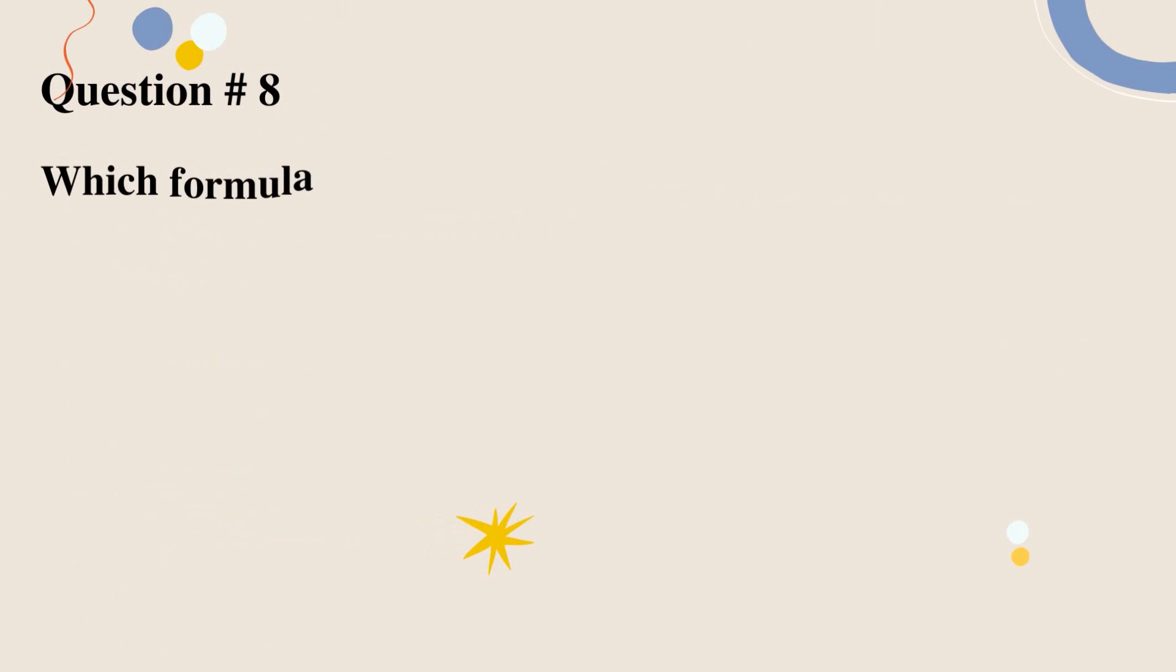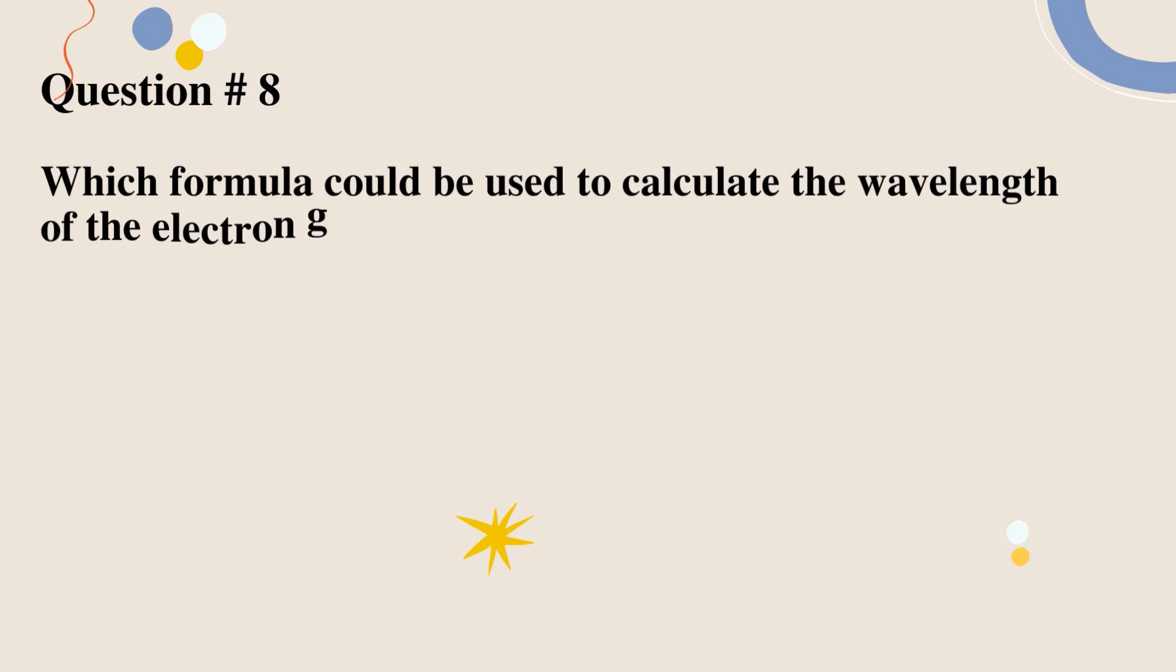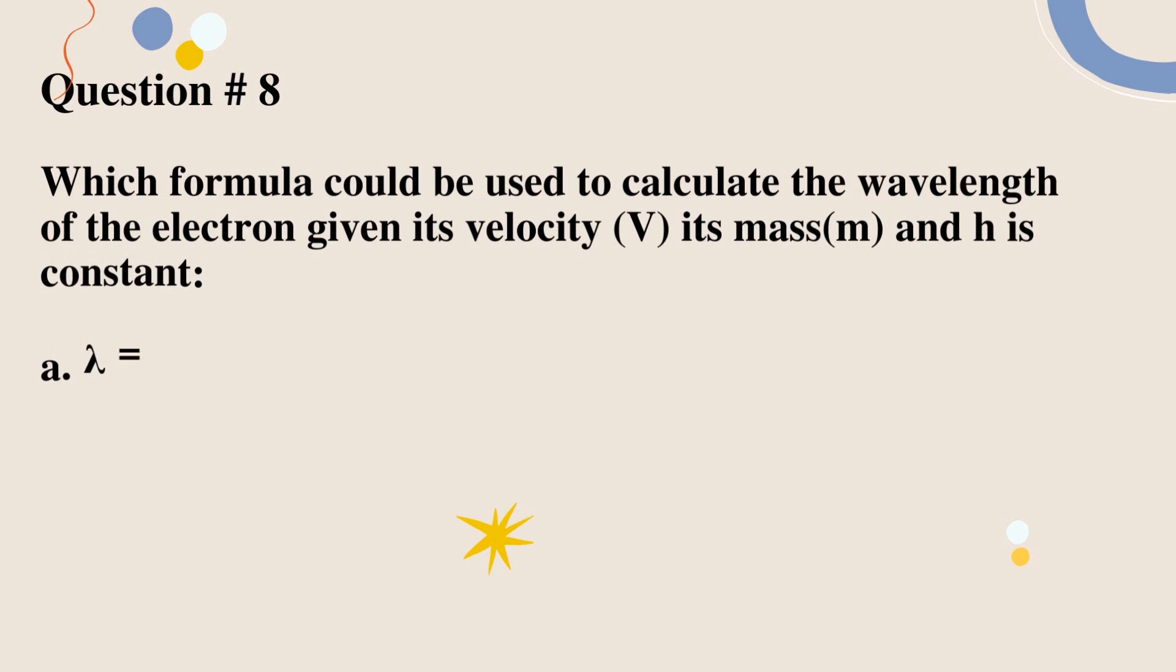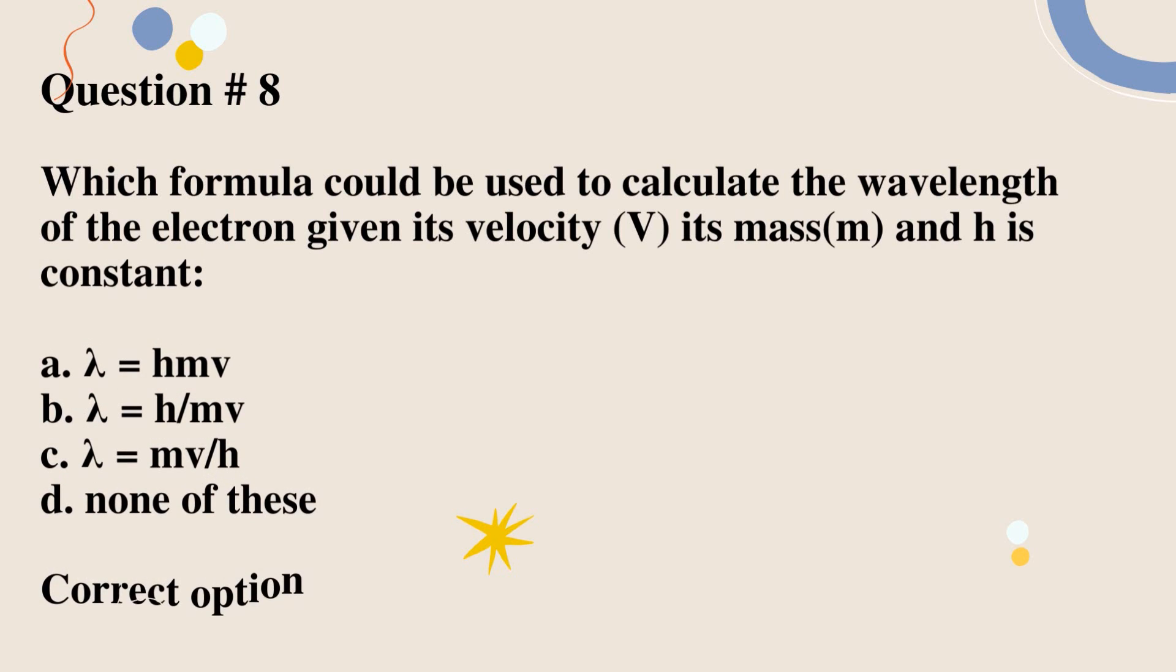Question number 8. Which formula could be used to calculate the wavelength of the electron given its velocity V, its mass M, and H is constant? A. Lambda equals H M V. B. Lambda equals H over M V. C. Lambda equals M V over H. D. None of these. Correct option is B.